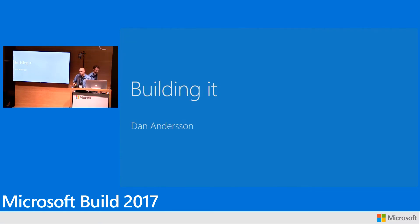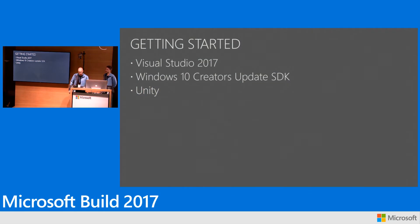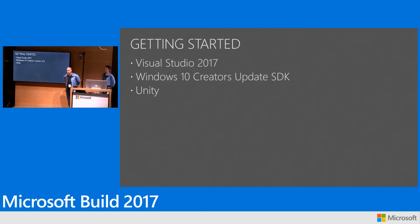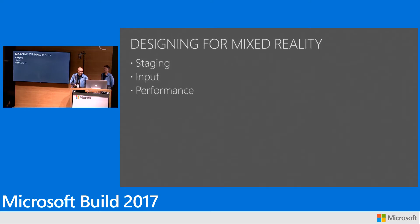Thank you, Richard. Good morning everybody. I want to quickly show you how easy it is to get started. For those who haven't dived into 3D yet, you download Visual Studio 2017, get the new Creators Update SDK, and then download Unity — that's what we used. You don't have to use Unity; you can use any engine you want using Windows Universal. Get one of those new wonderful devices and you can start diving in.